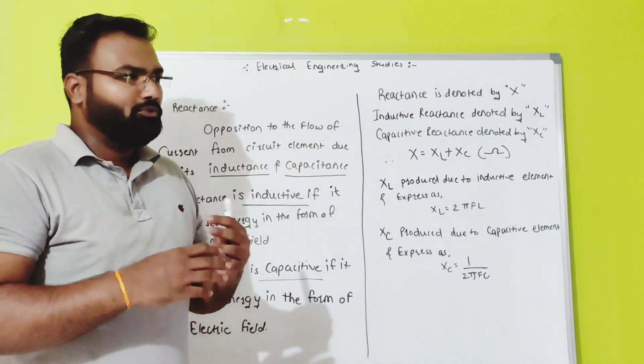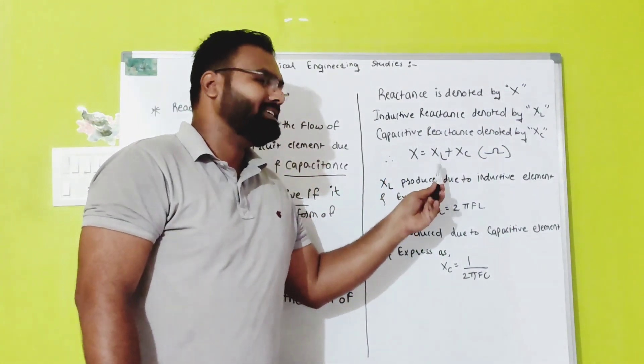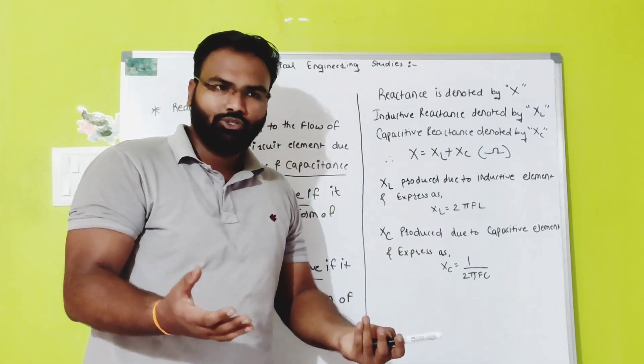Now, if you want to add both of them to get the total reactance, then this is the basic formula: X equals XL plus XC, which is denoted by ohm. Because it is nothing but the opposition to the flow of current.